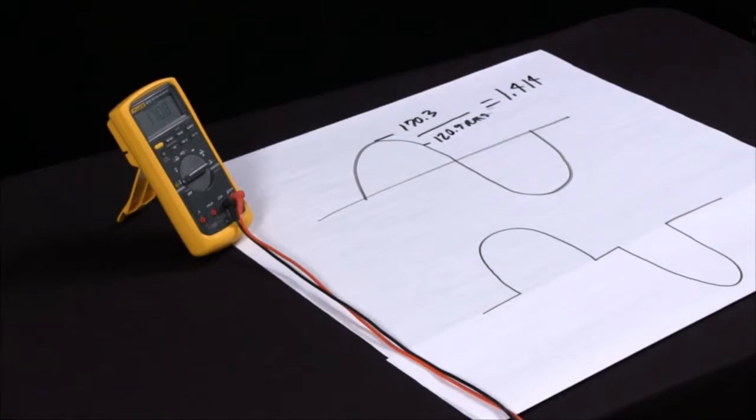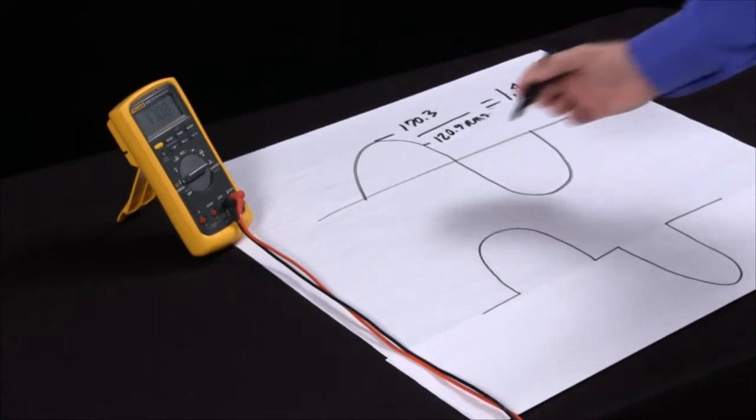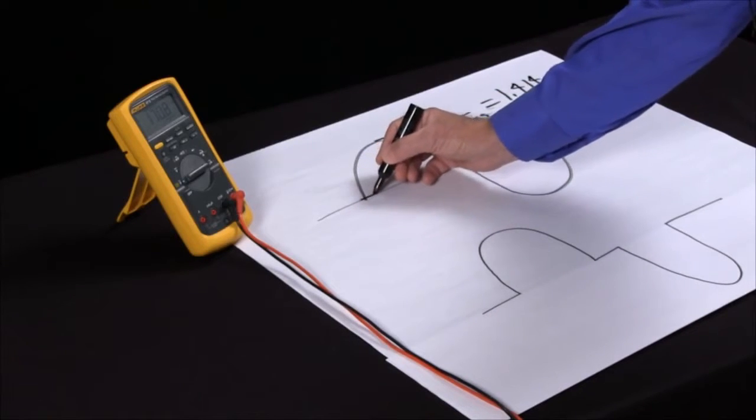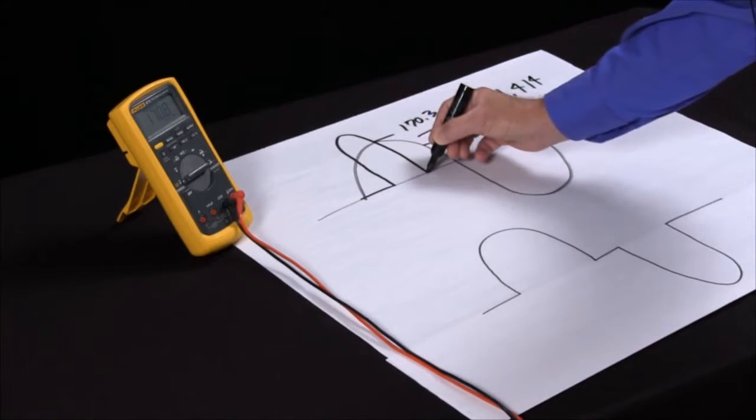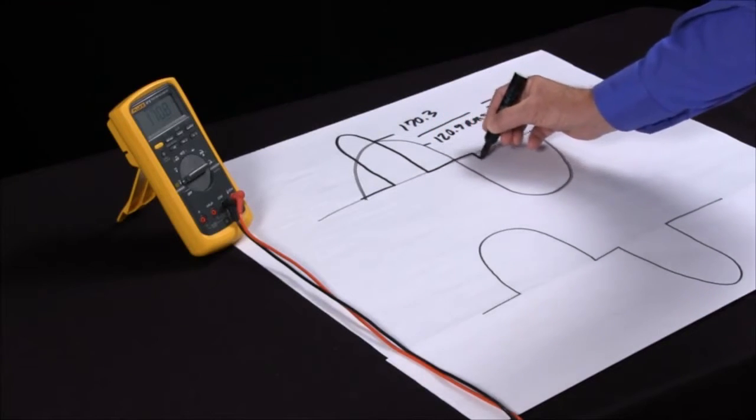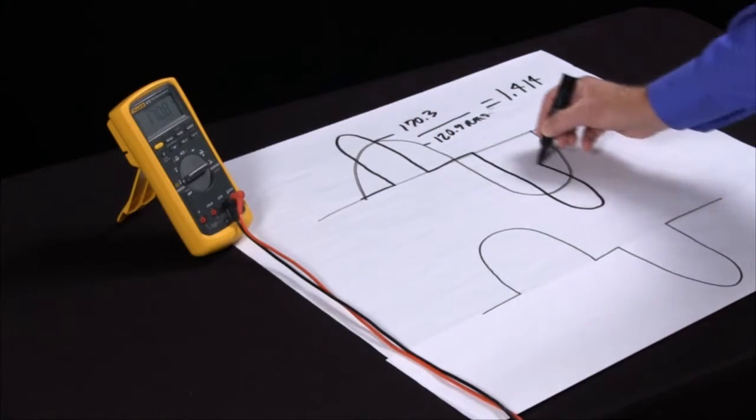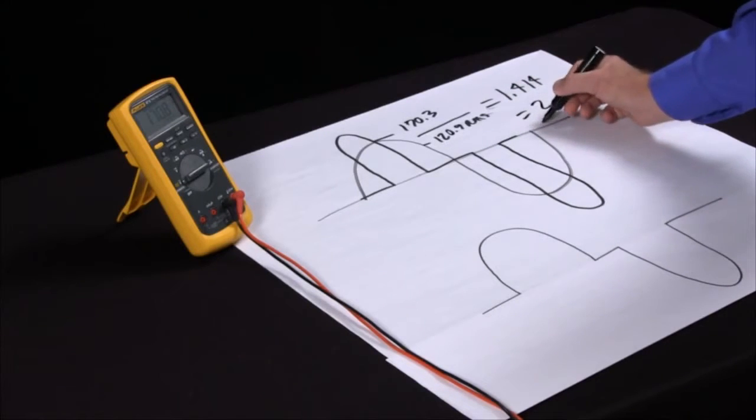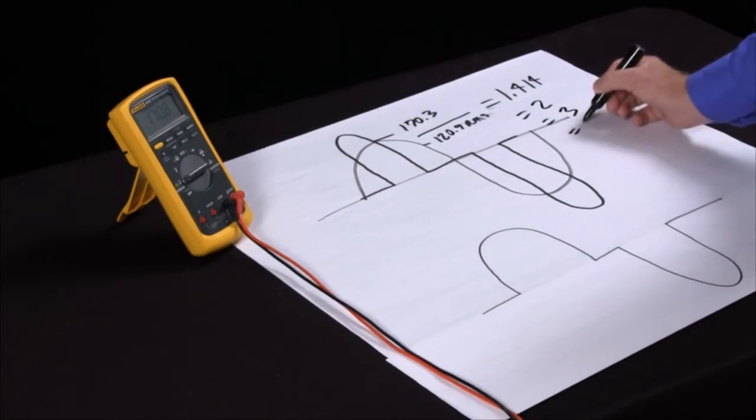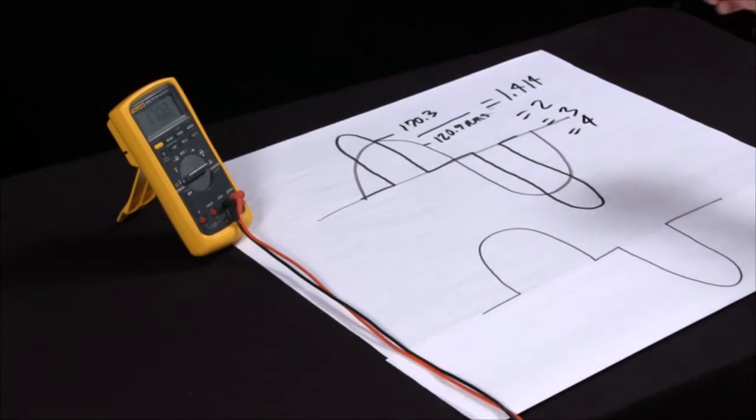Now if we have a signal that is distorted or has quite a bit of harmonics in it, what happens is the peak gets higher and the RMS gets lower. So when I look at this ratio, I will start to see a ratio that will be equal to 2, equal to 3, maybe equal to 4. This will be an indication that the higher the number is, the more harmonic distortion I have on the signal.